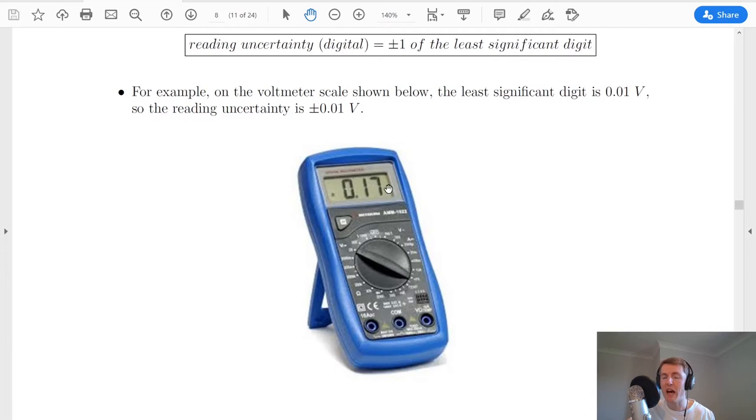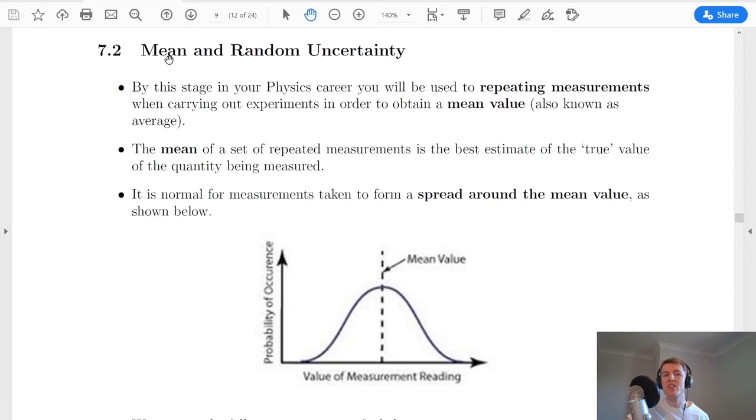As an example if we look at this voltmeter here you'll see that there is a reading of 0.17 volts on the screen. Now the least significant digit would be this one over here, the actual number 7 doesn't matter, it's just the least value that that could have which is a 1, and so the least significant digit in this case would be the 0.01. So my reading uncertainty for the digital scale would be plus or minus 0.01 volts.